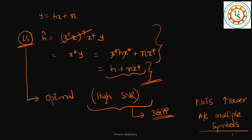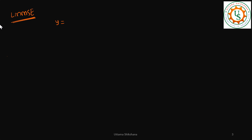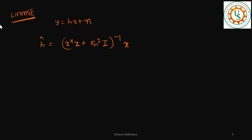So now the question is: can we apply LMMSE, and is it worth it? We have y is equal to hx plus n. The LMMSE estimator would look something like: sigma_n squared times identity, whole inverse, times x* times y. This is your noise statistics R_NN given by n times n*. Since this is a single equation, the identity term is just 1.